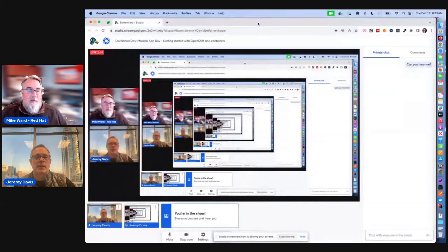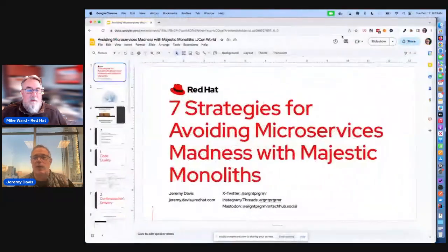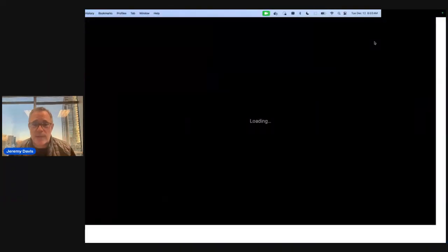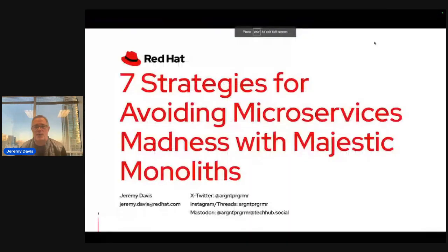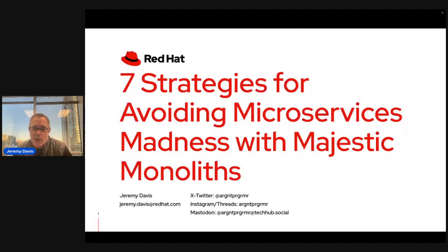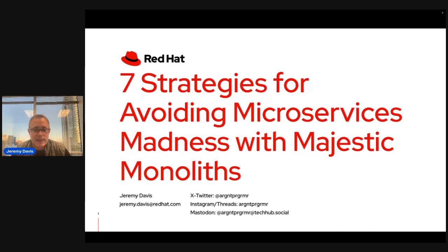I'm going to share my entire screen and bounce over to my slides. Thanks for joining this morning or afternoon, depending upon where you are — hopefully you grabbed a cup of coffee for this session on Avoiding Microservices Madness with Majestic Monoliths. My name is Jeremy Davis. You can find me at jeremy.davis@redhat.com, and on the various socials — I go by the tag Arrogant Programmer on Twitter, Threads, and Mastodon.